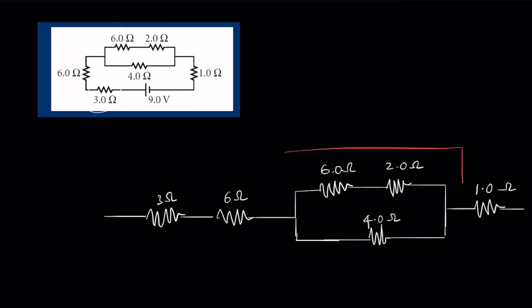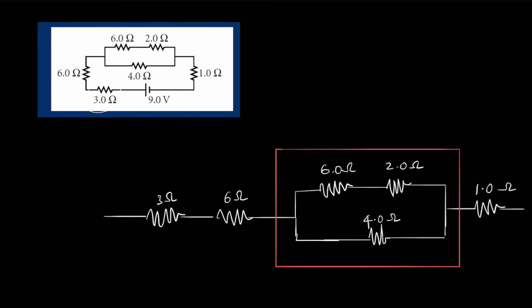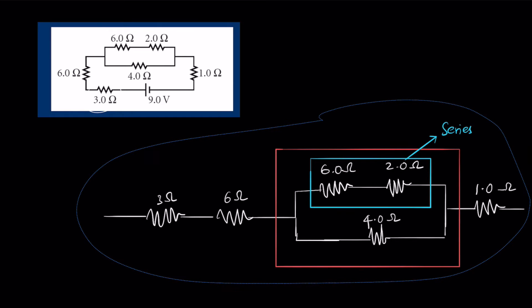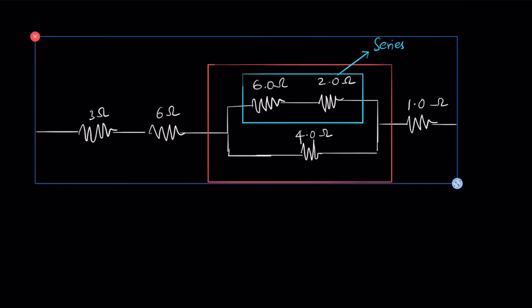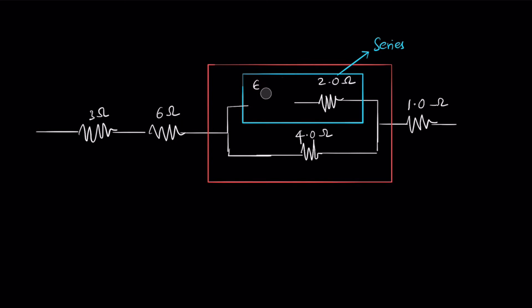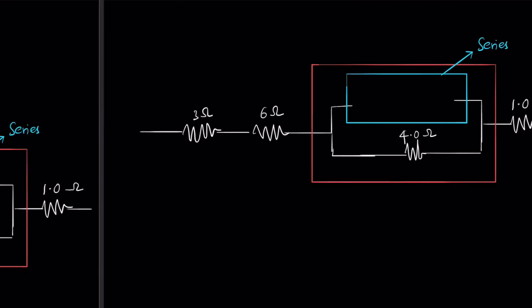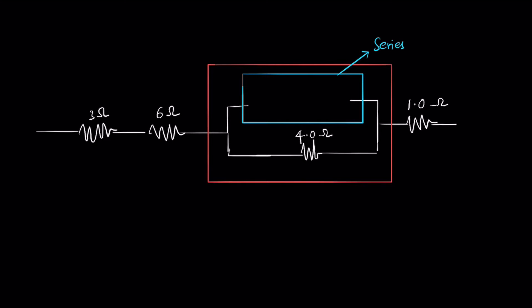Always look for the most internally complex part of the circuit and simplify that first. The innermost complex part here is the blue section, which has two resistors in series. Because they are in series, you can add them: 6 plus 2 equals 8 ohms. This reduces to a single 8-ohm resistor.